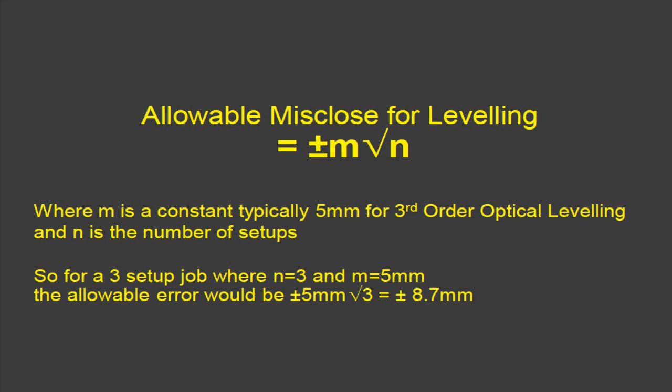So if we have a job where we did three setups, that would be three backsights and three foresights, then n would be three. Using five millimeters for m, the allowable error would be plus or minus five millimeters times the square root of three, which equals plus or minus eight point seven millimeters. So provided that your misclose was less than eight point seven millimeters, you could say that the leveling was generally acceptable for around a third-order standard.